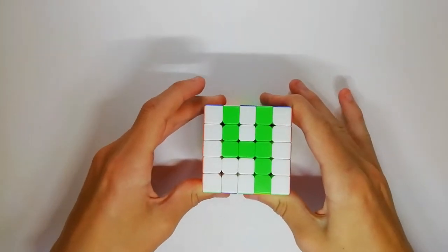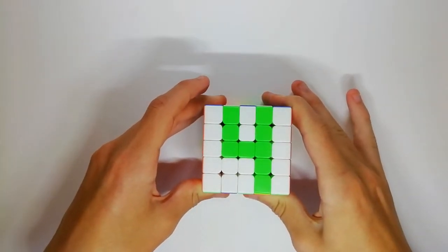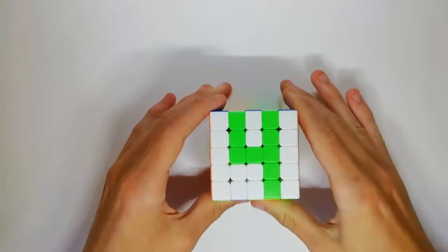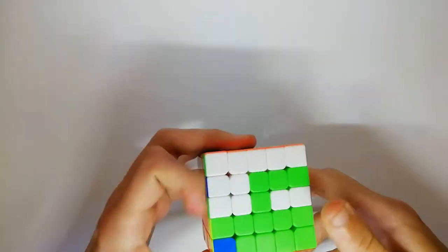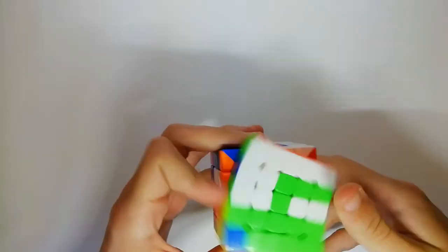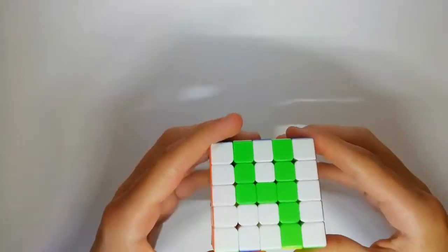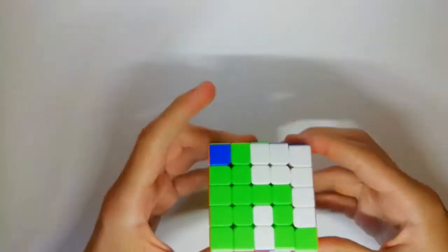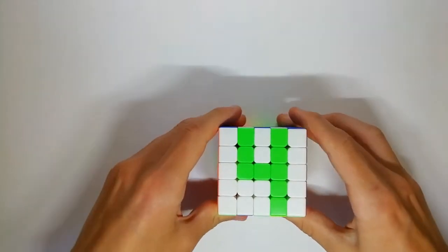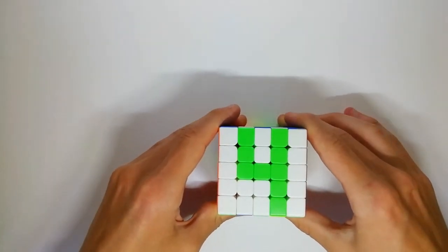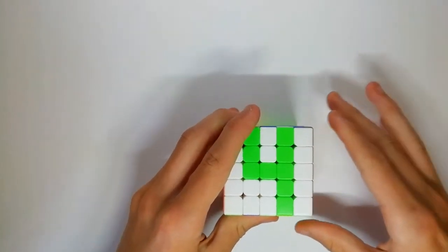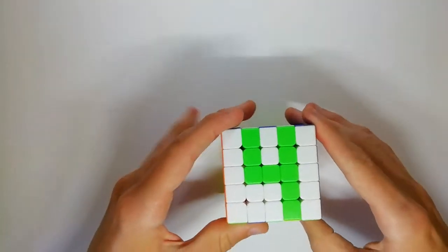In 4th place we have the YJMGC 5x5M. It's a nice smooth 5x5, however it is a bit unstable and inflexible, which is why it's only in 4th place. It is slightly more than the Meilong 5x5 at £16, but as I said that's not a factor in determining the ranking.